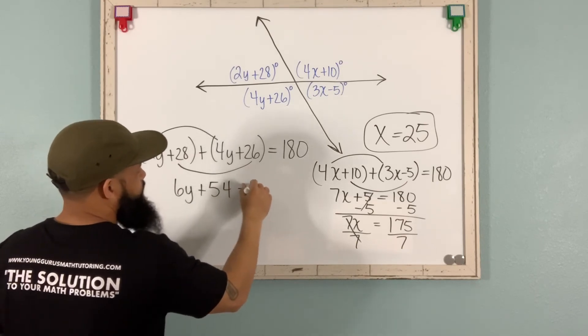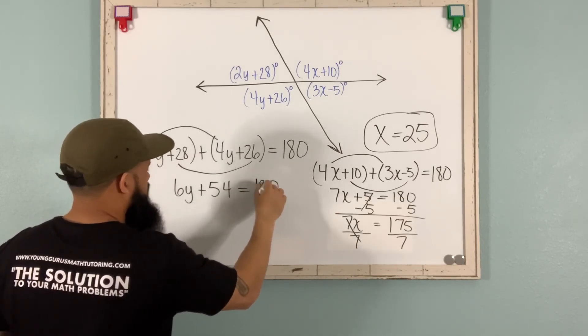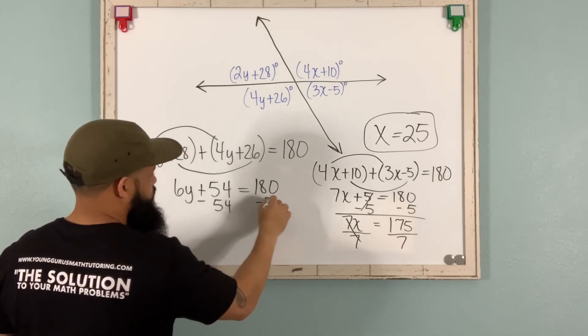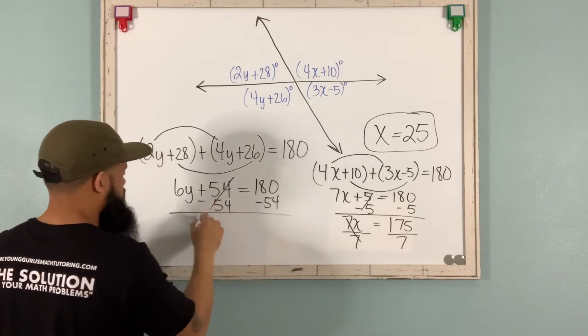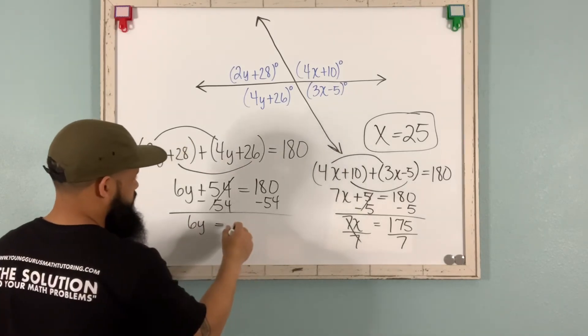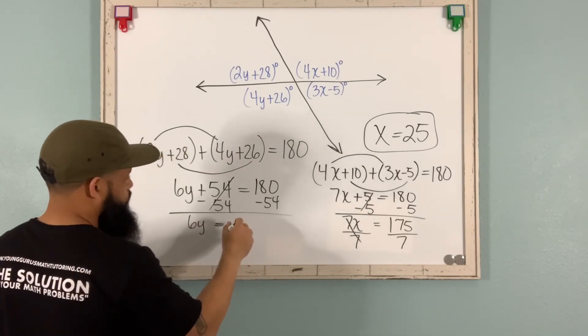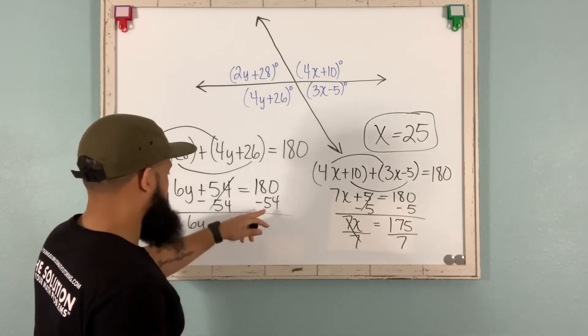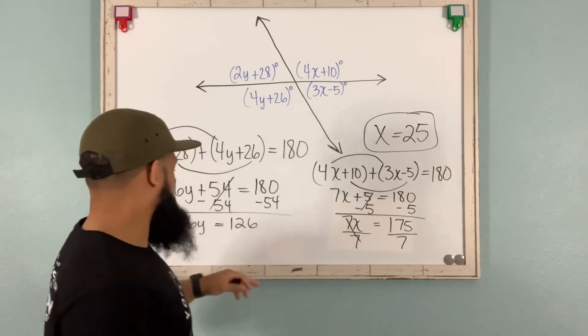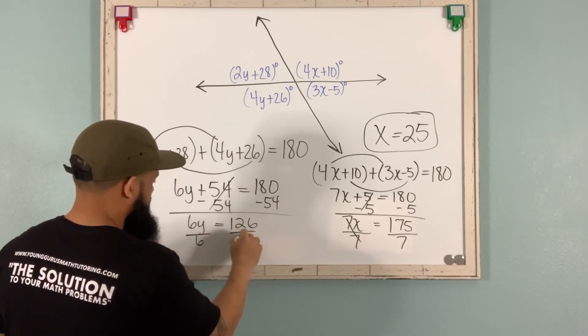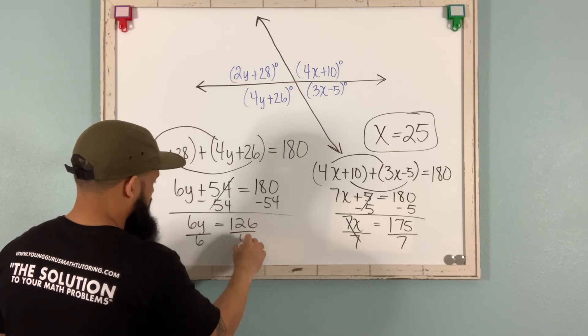All right. So now I subtract 54. Subtract 54. Boom. 6y equals 126, I believe. Yep. 126. And then I divide by 6 here. And then I'll get y equals 21.